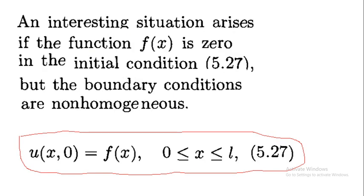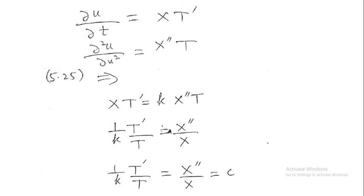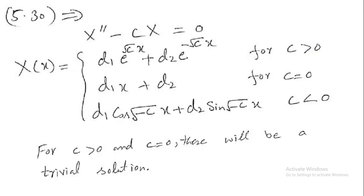An interesting situation arises if the function f(x) in the initial condition 5.27 is zero — that is, the initial condition becomes zero — but the boundary conditions are non-homogeneous. In our derivation above, the boundary conditions were homogeneous (zero), while the initial condition was a function f(x). Now consider the case where the boundary conditions are non-zero and the initial condition is zero. How do we solve such a problem?